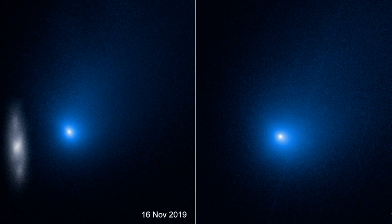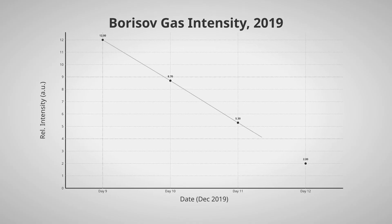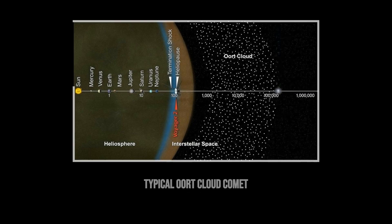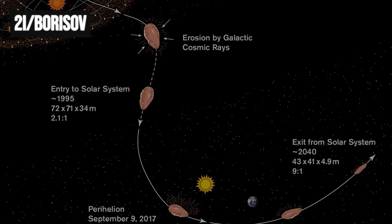Then came Borisov in 2019, blazing a much more familiar path. Borisov looked and acted like a classic comet, developing a bright coma and a sweeping tail, its spectrum dominated by carbon monoxide and cyanide. The activity was steady, the chemistry exotic, but nothing out of bounds for a comet from the Oort cloud. It was the first interstellar visitor to behave like a comet, not an asteroid.